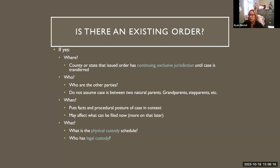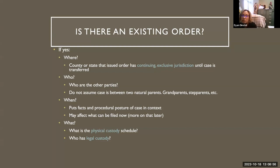If there is an existing order, ideally you want to see it, but you'll want to know where it was issued. That's important because once an order is issued in a custody case, that jurisdiction has what's called continuing exclusive jurisdiction over the custody action until the case is transferred elsewhere. Knowing where the order was issued right off the bat is helpful — if it was issued in Virginia, depending on the situation, there may not be much you can advise the client to do here.